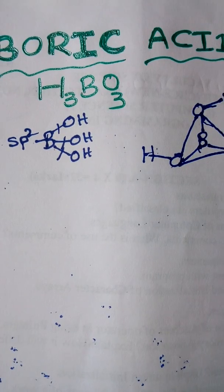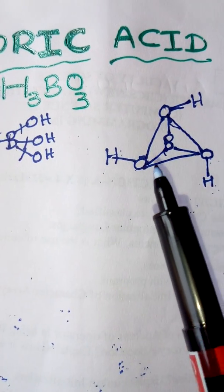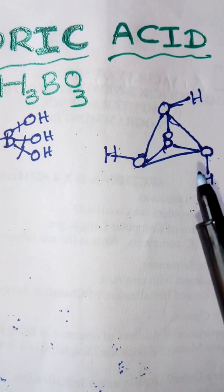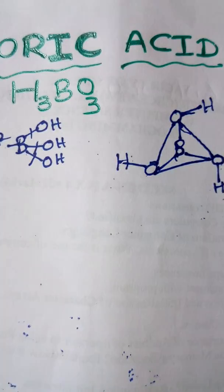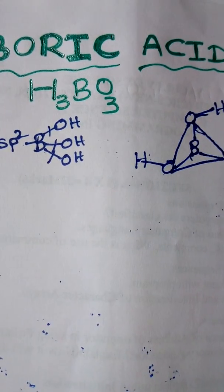In boric acid, three oxygen atoms are arranged around the boron in a plane or triangular shape. We know very well that when OH groups are there,